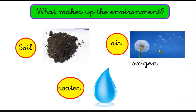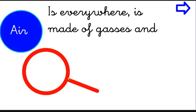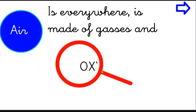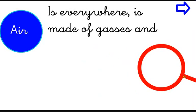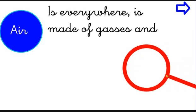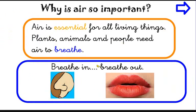The third element that makes up the environment is the air. The air is everywhere and it's made of gases. One of them is oxygen. Oxygen is everywhere but you cannot see it — but it's there. When you breathe in, you get oxygen into your lungs. Air is essential for all living things — plants, animals, and people need air to breathe.